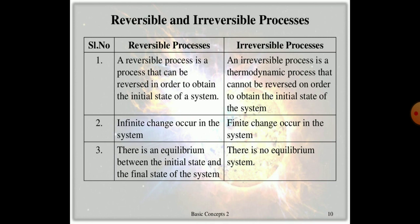There are two basic types: reversible and irreversible processes. A reversible process can be reversed to obtain the initial state of the system, while an irreversible process cannot. In a reversible process, infinitesimal change occurs in the system, while in an irreversible process a finite change occurs. In a reversible process there is equilibrium between initial and final states, while in an irreversible process there is no such equilibrium.